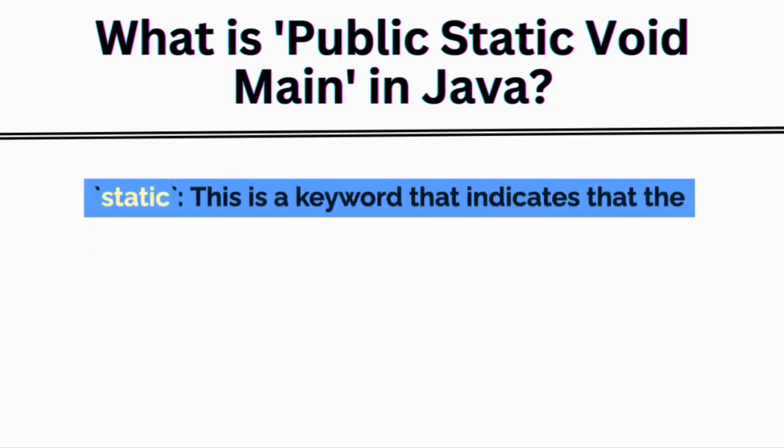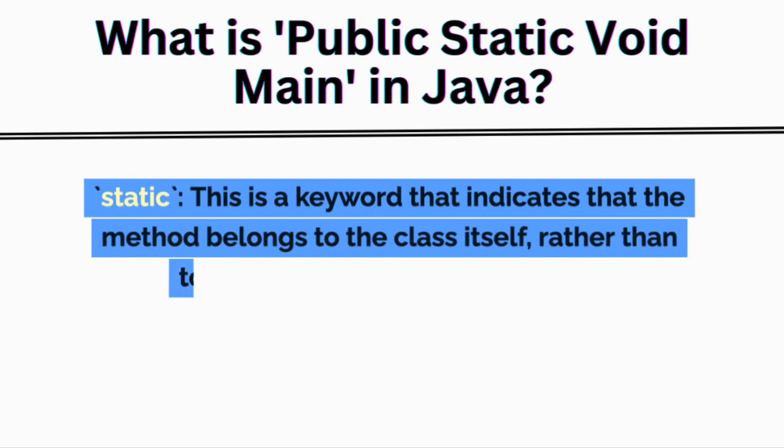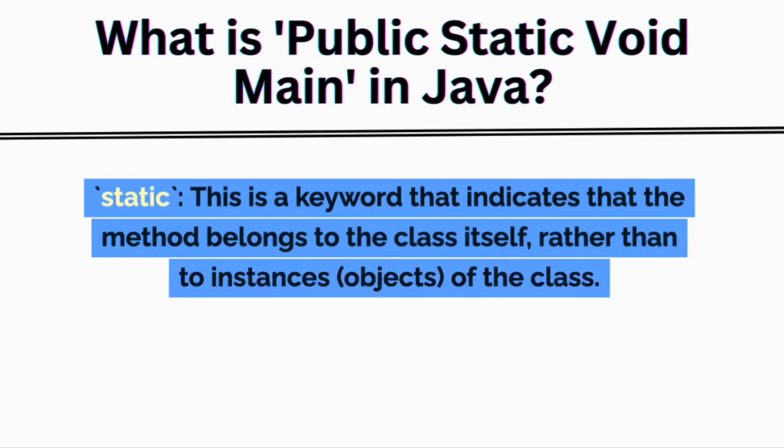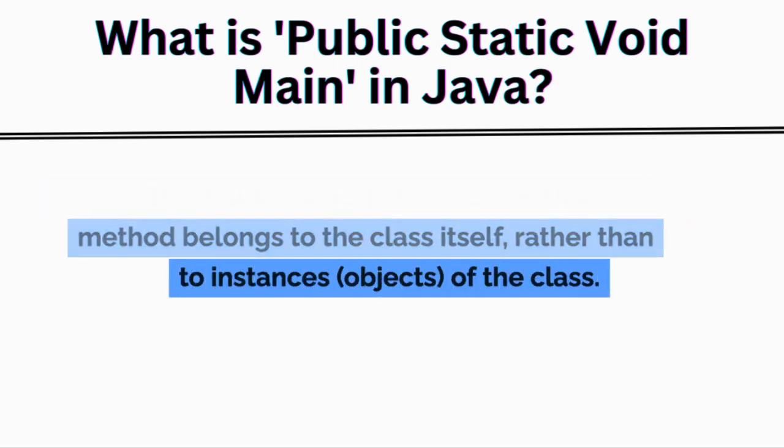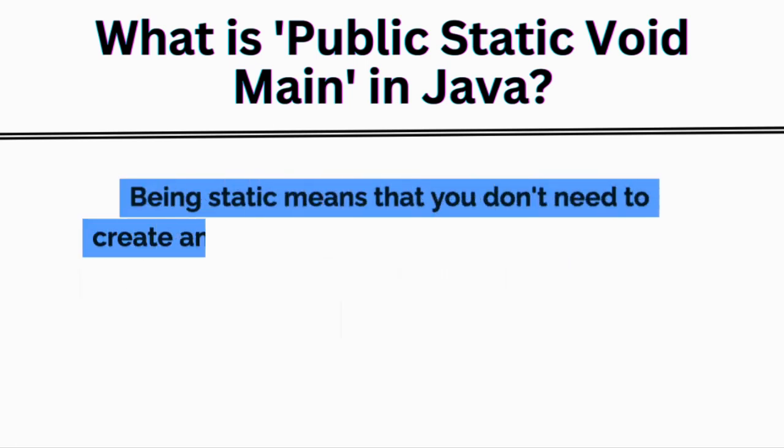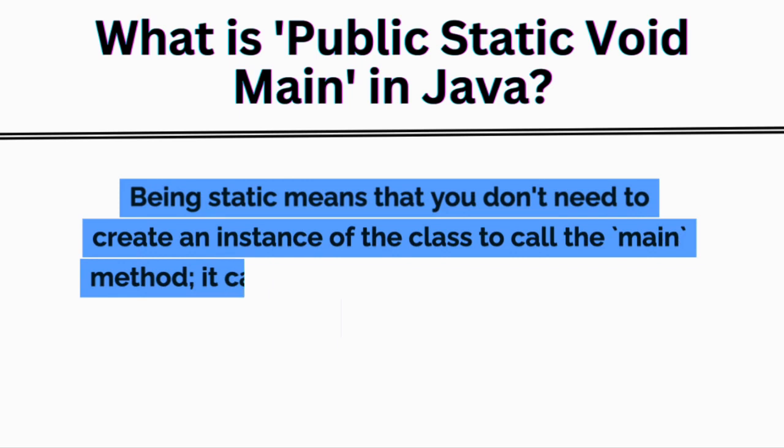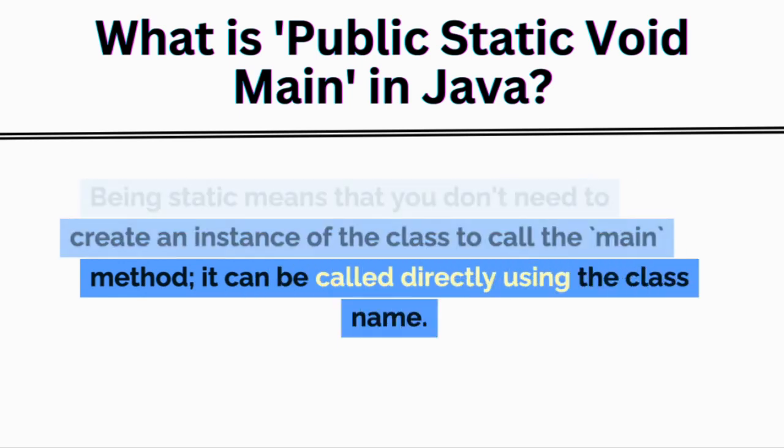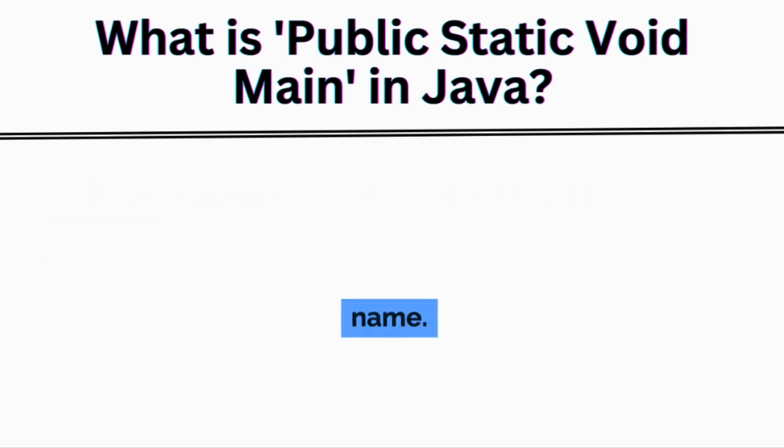Static is a keyword that indicates the method belongs to the class itself, rather than to instances or objects of the class. Being static means that you don't need to create an instance of the class to call the main method; it can be called directly using the class name.